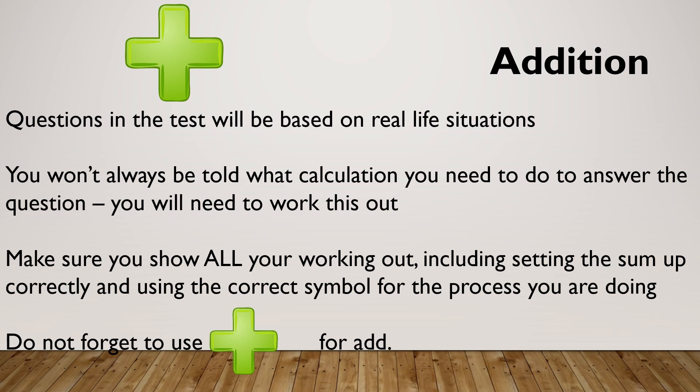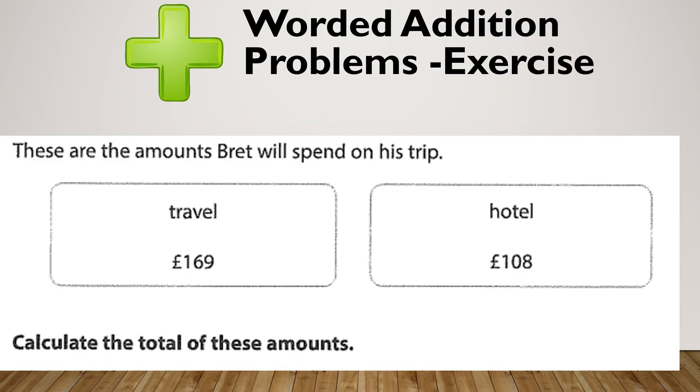Let's have a look at some exam-style questions. Here's the first one. These are the amounts that Brett will spend on his trip: travel is going to be £169 and the hotel is going to be £108. Calculate the total of these amounts. Pause and give it a go.